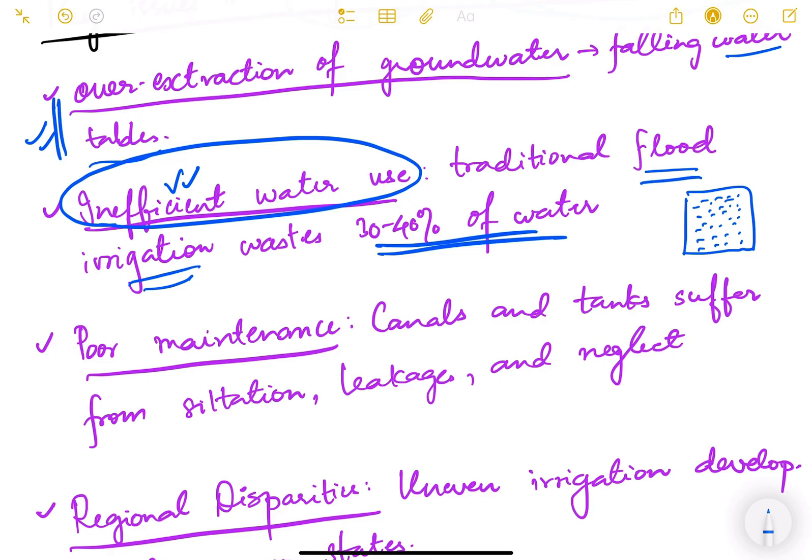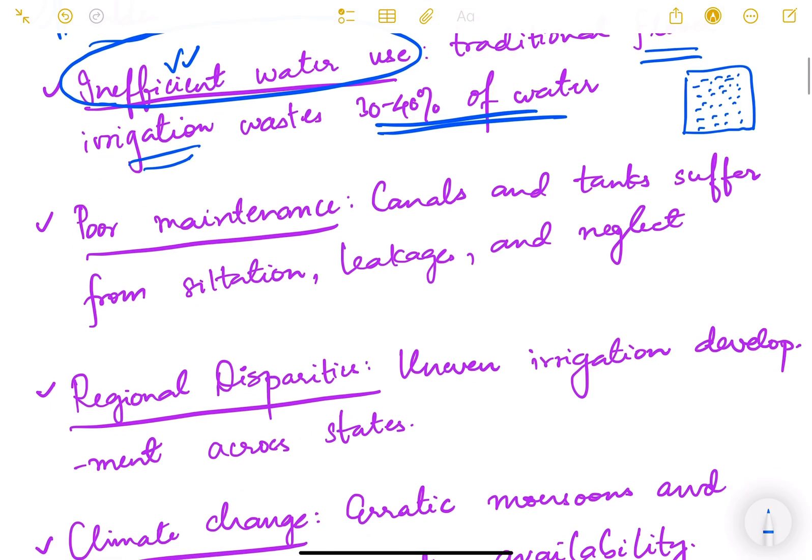We should focus more upon micro irrigation, which we will study later on. Inefficient water use is the second issue or drawback of the Indian irrigation system.